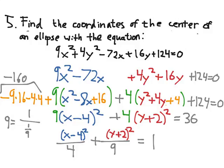So, now we've found the standard form of our equation of an ellipse. It's now apparent that the coordinates of the center are 4 and negative 2. Because, you go minus 4 and minus a negative 2. So, that is the solution.